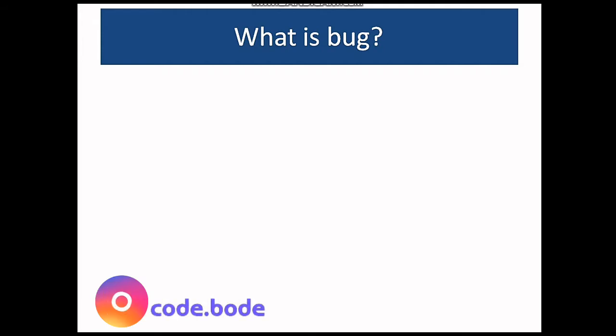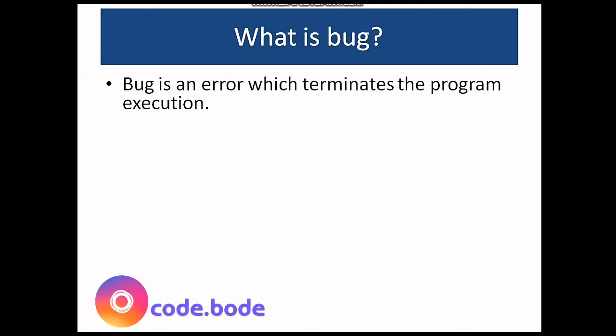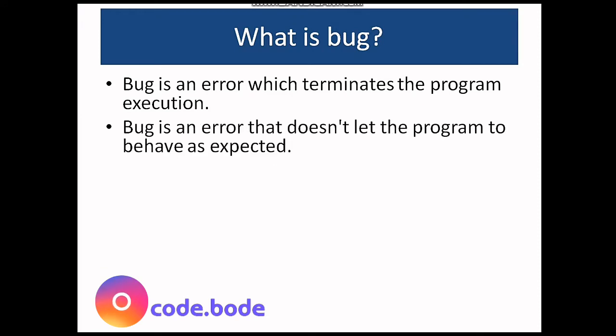Bug is an error which terminates the program execution, or you can also say that bug is an error that does not let the program to give the expected output. Let's understand this with the help of an example.